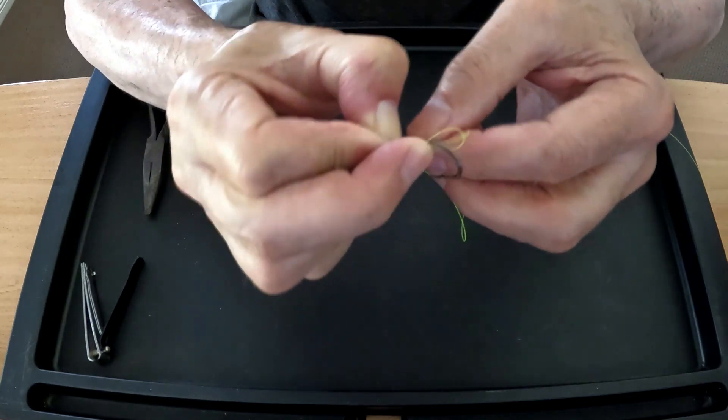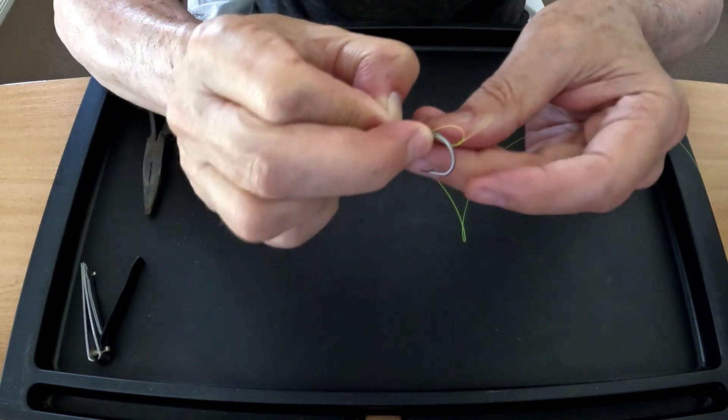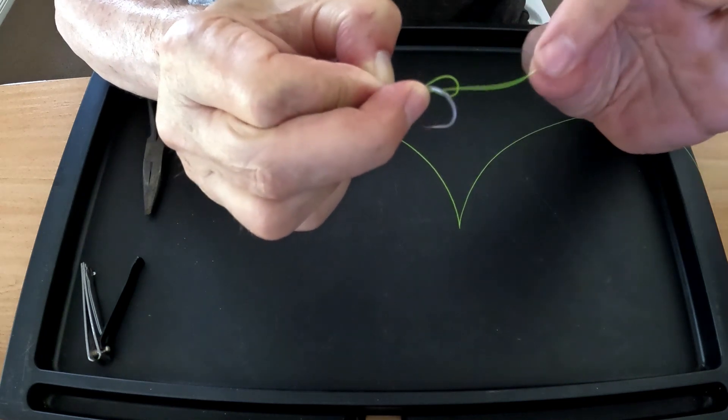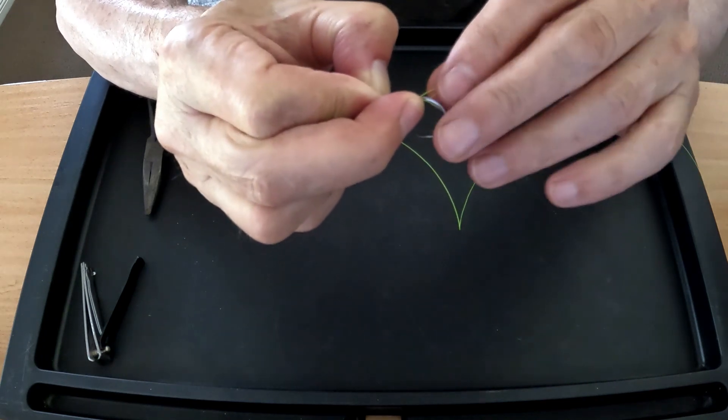Once you've done that and you've got enough there, you take that line, you put it through the loop that you've created. Now, the thing is, you're going to have to pull this line, but what you do is you don't pull it first.